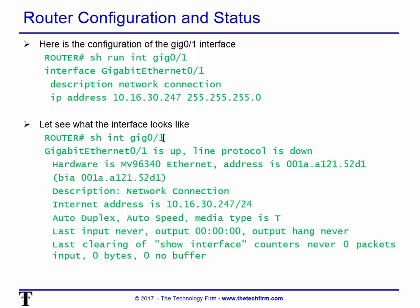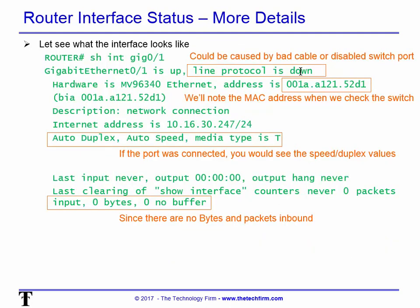Running 'show interface Gig0/1' — it says the interface is up but the line protocol is down. That's important. Line protocol down could be a disabled switch port, a bad cable, or a bunch of other things. Here's the MAC address of the router itself — important when we go to the switch in a moment. It says auto duplex, auto speed, media type T — it's not telling you the actual speed or duplex, which means it's not connected. If it was connected it would say something like full duplex, 1 gig or 100 meg. And down at the bottom we confirm that input on that port is zero bytes — so nothing is coming in.